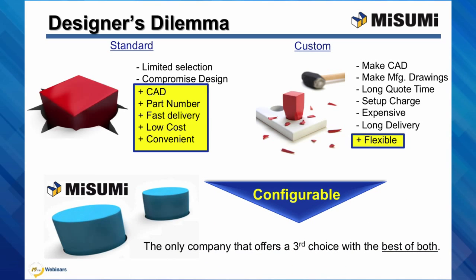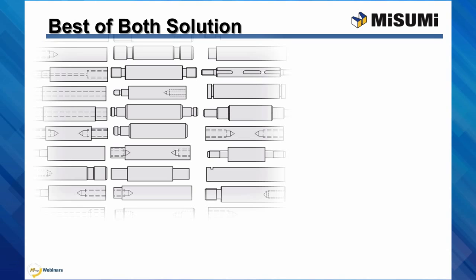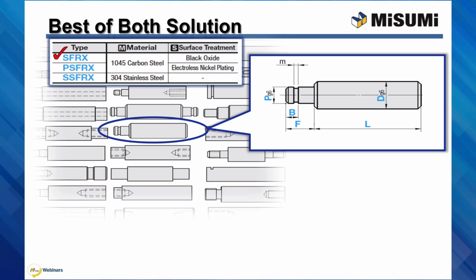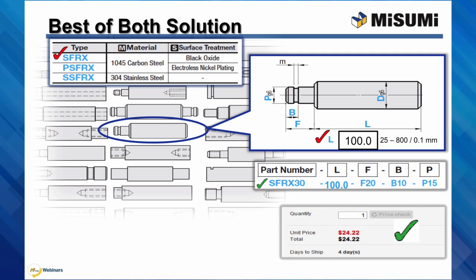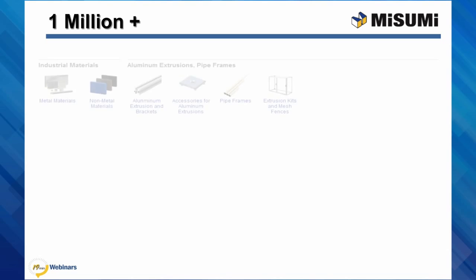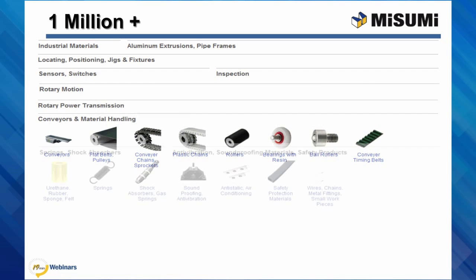Misumi offers configurable, which is the best of both — easy and flexible. Configurable components are easy to design with and purchase. Online, select the product geometry desired, the material and surface finish, input the size for each configurable dimension within the range and increments shown. You'll get a smart part number, instant price and days to ship, and the CAD model. All of this configurability is available with our over 1 million components available at MisumiUSA.com. Now I'll turn it over to our Misumi engineer.